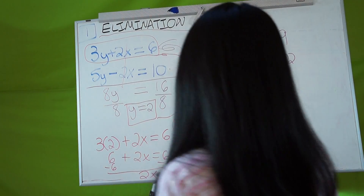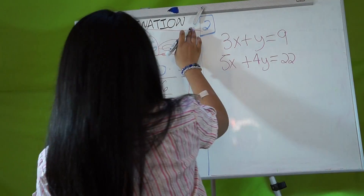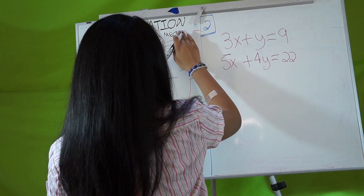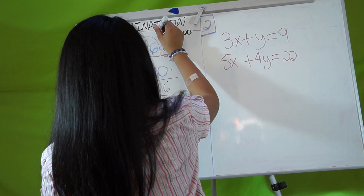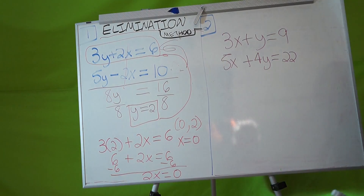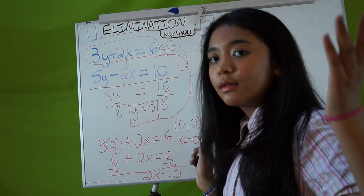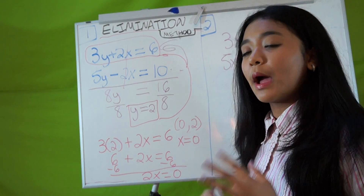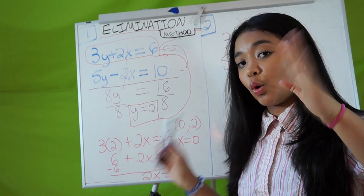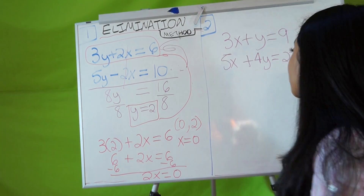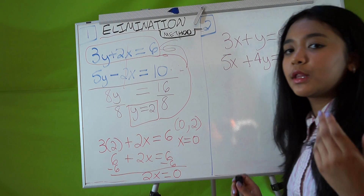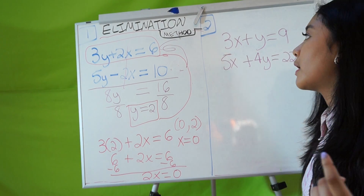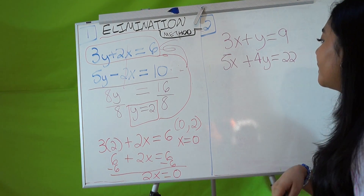Let's do example number 2. Sometimes when you do the elimination method, you may have a little bit of trouble finding how to eliminate a variable. Don't worry, because here's what you can do: you can multiply a negative or positive number to either the x term or the y term to cancel them out. You see how you can't technically eliminate them directly in this set?